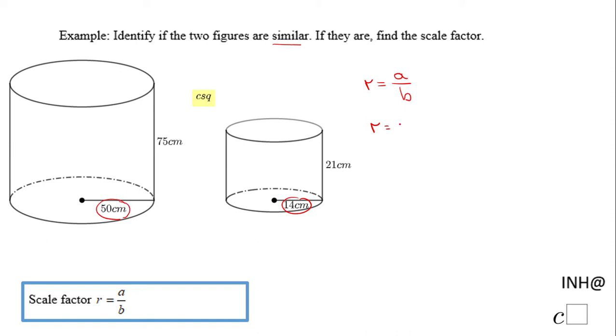So I'm gonna end up here: 50 over 14, and if we simplify by 2, 25 over 7. So that means if I multiply this 14 by 25 over 7, I get this 50.